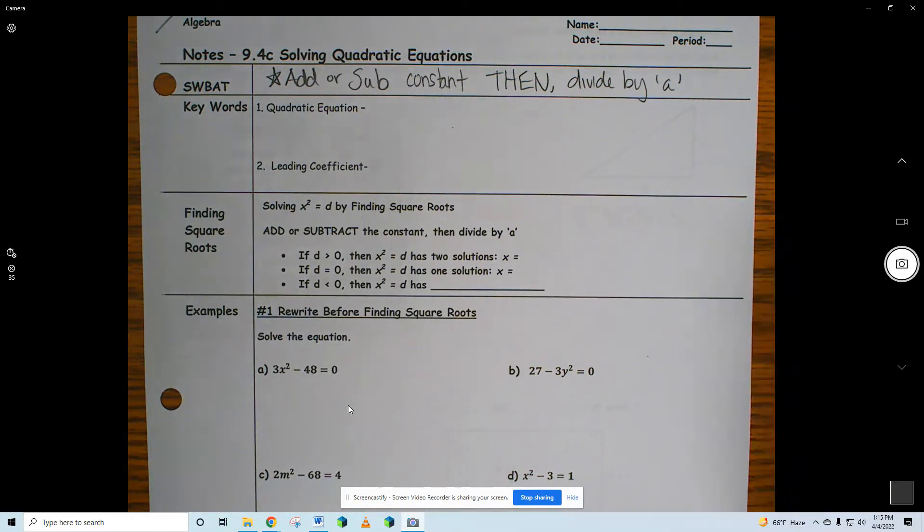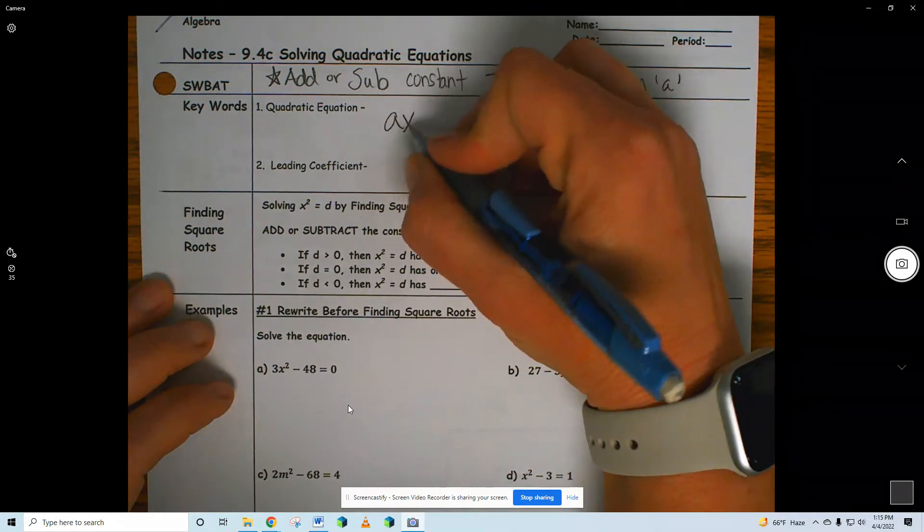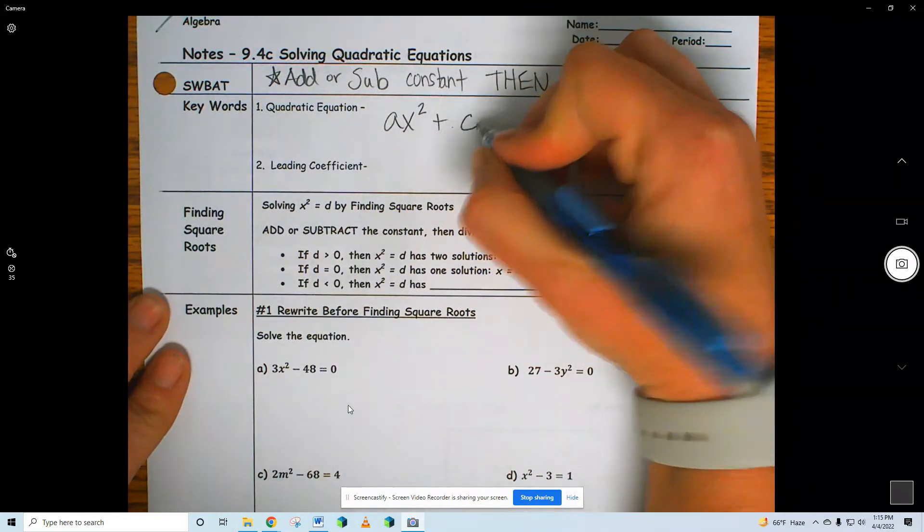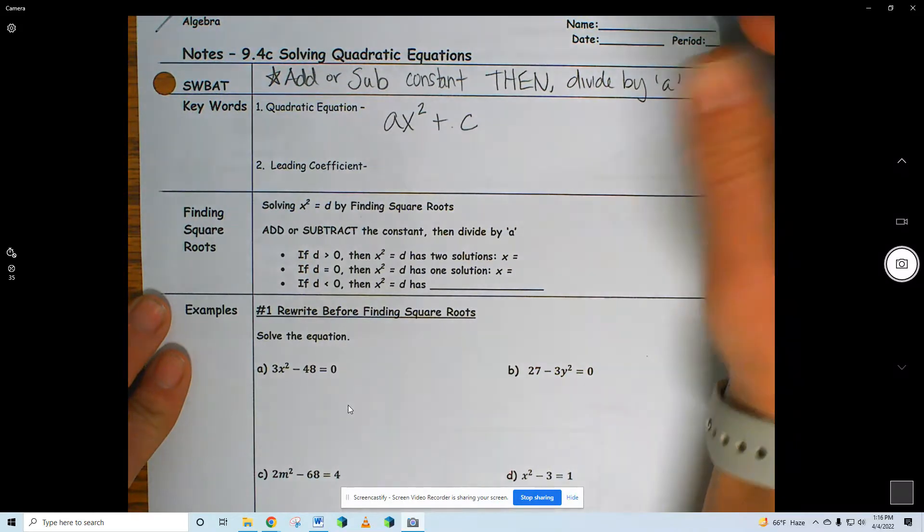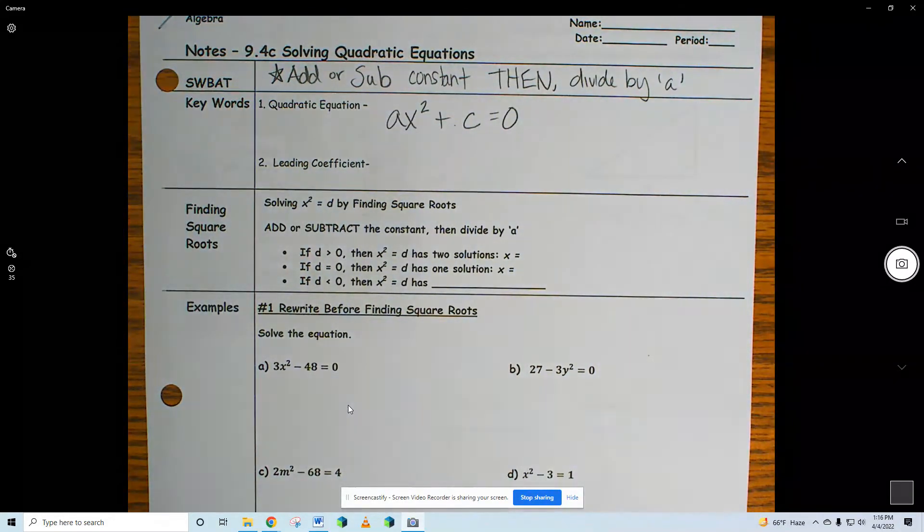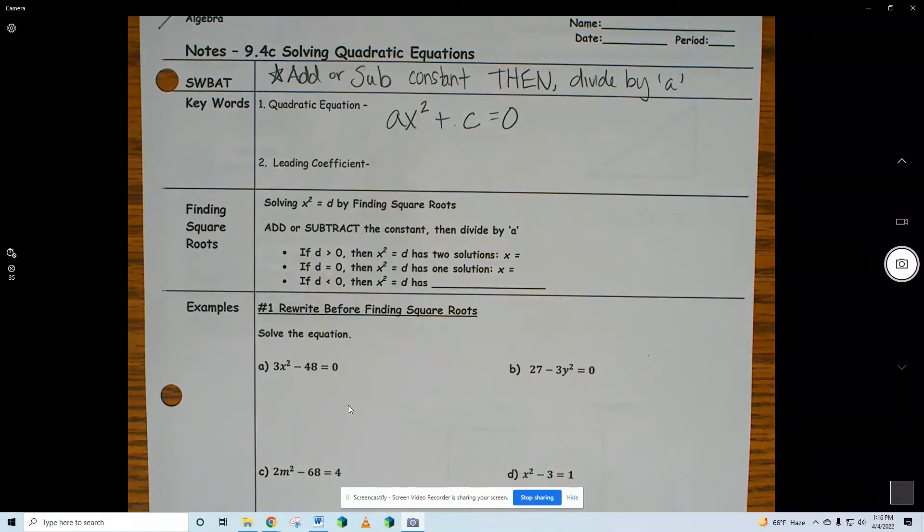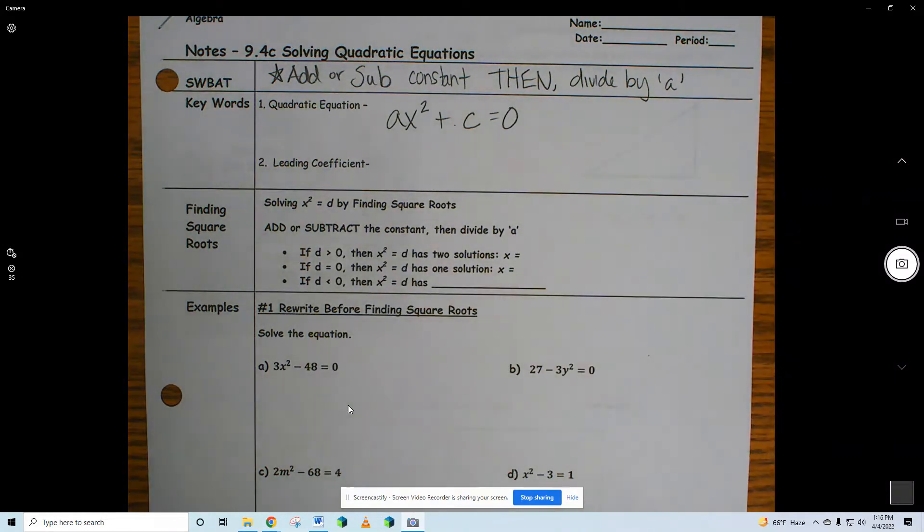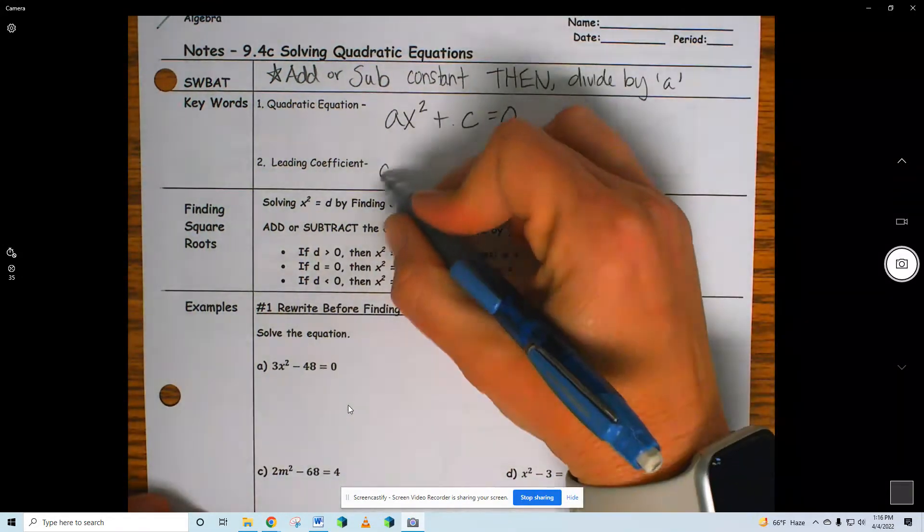Today all we have is ax squared plus c. There is no b. B is like x to the first power. Our leading coefficient is going to be a. That's what we divide by.